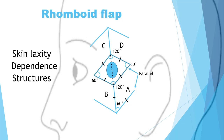Once you have these four flaps — A, B, C, and D — you choose one and transpose it into the defect. If we were to choose flap A, this is the scar that we would end up with, and as you can see, it would not be dependent. The donor would close directly and it would not cause any tension on any nearby structures. And that's how you perform a rhomboid flap. Thank you.